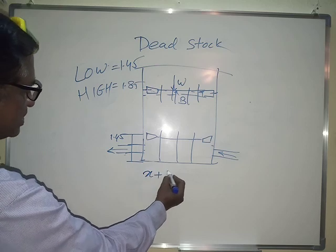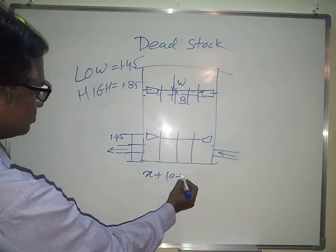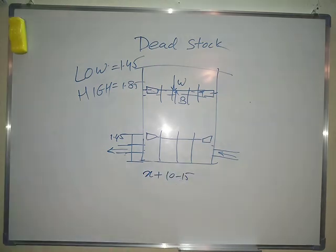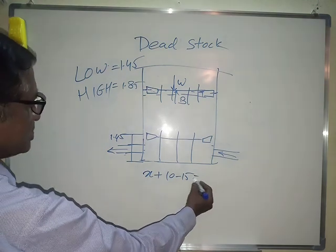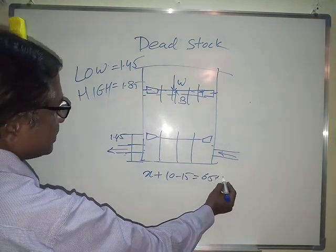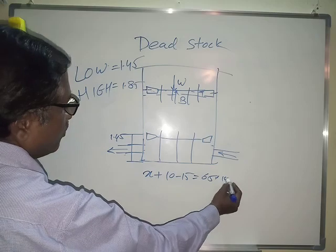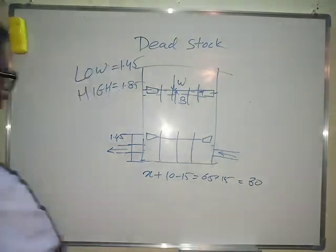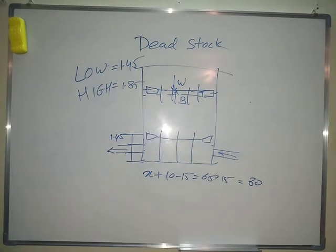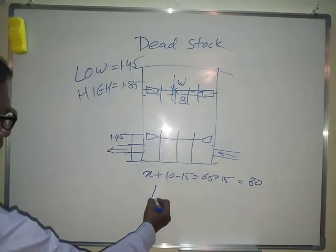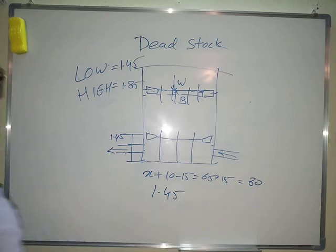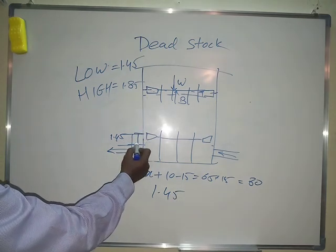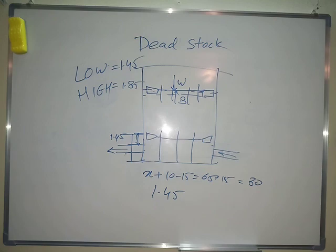In a fixed roof tank we have seen X plus 10 to 15, meaning 65 centimeters plus 15, that is up to 680mm. But in a floating screen or floating roof tank, it is up to 1.45 meters. So there is additional stock blockage in the floating roof or floating screen tank.